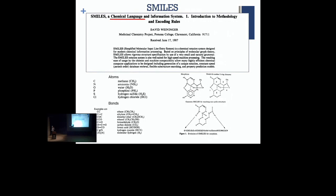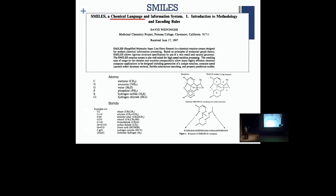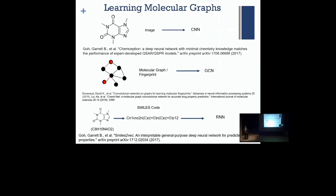One of those representations — not everything is done on graphs — is something called SMILES, which is a chemical language in itself that represents the molecule in a linear fashion. You can represent any molecule from left to right, writing the carbons from one to another, and you have specifically how the bonds are connected, which atoms, etc.